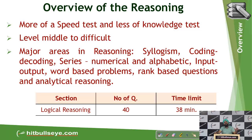In the reasoning section, different varieties of questions were covered. It was again more of a speed test with some easy and some difficult questions — overall medium to difficult. Major areas covered were syllogism, coding-decoding, series questions both numerical and alphabetical, input-output questions, word-based problems, rank-based problems, and sets of analytical reasoning.